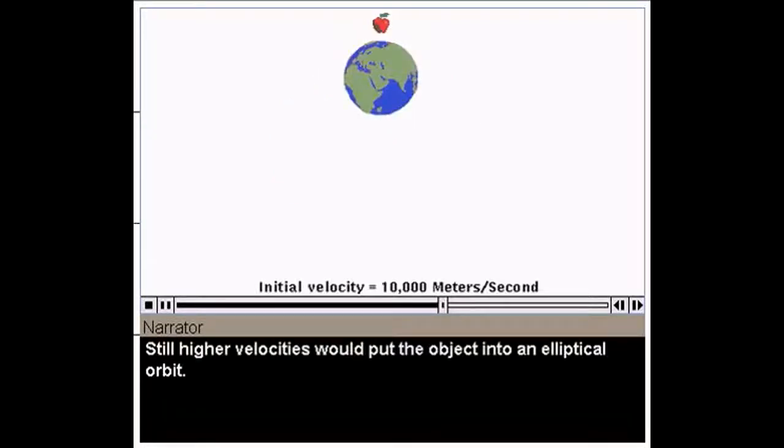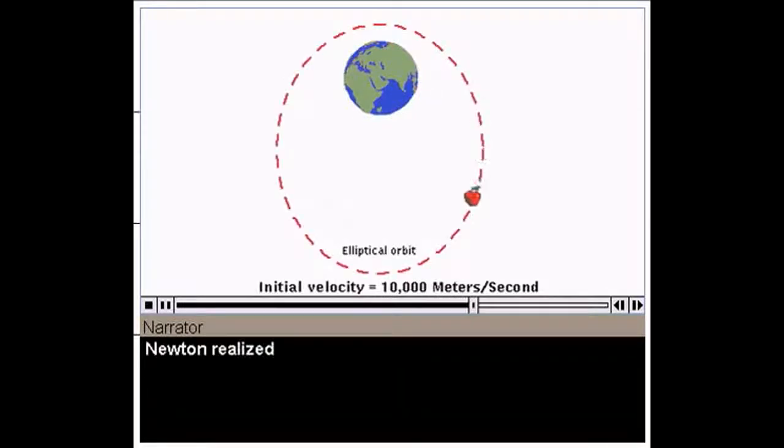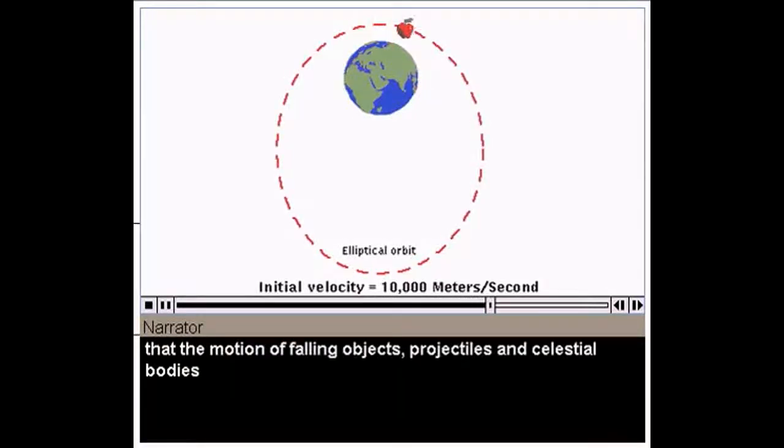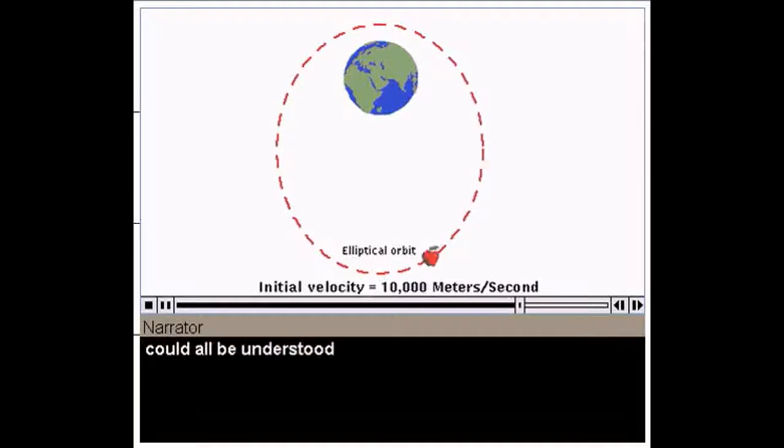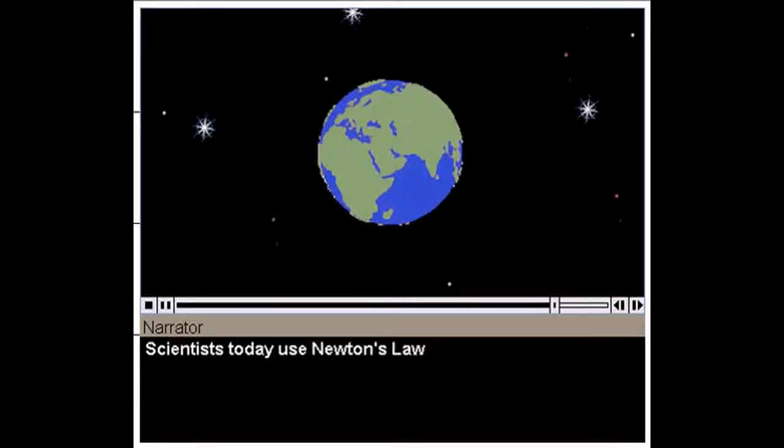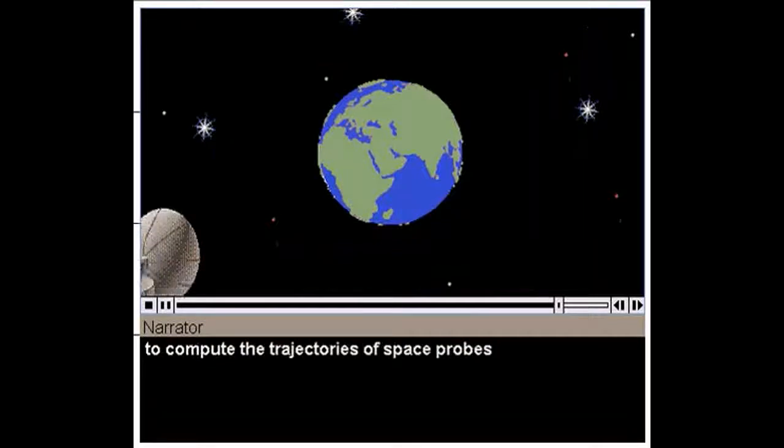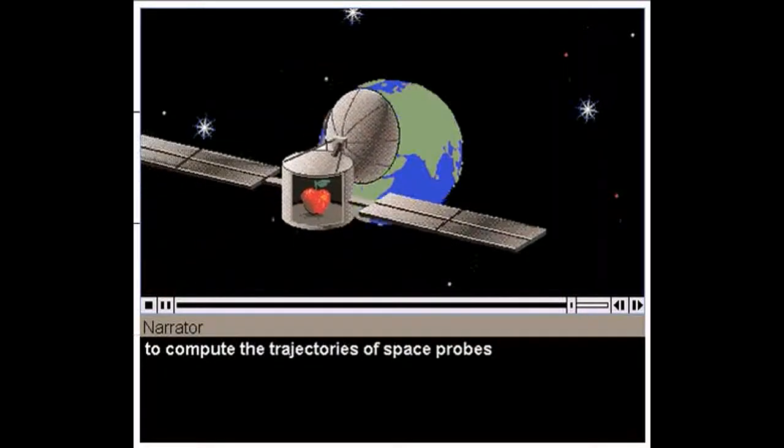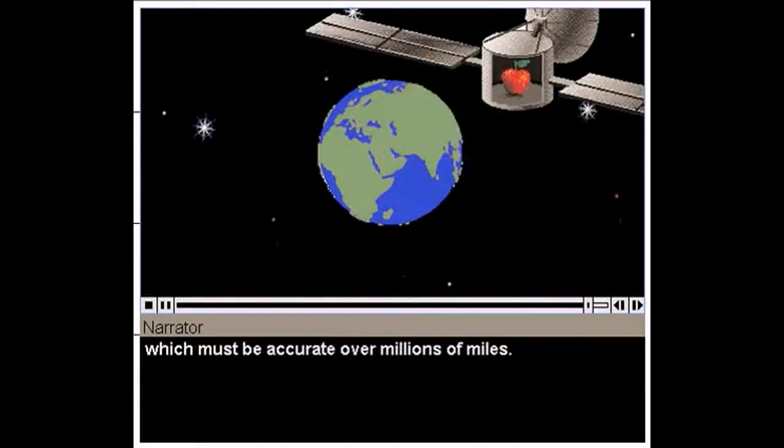Still higher velocities would put the object into an elliptical orbit. Newton realized that the motion of falling objects, projectiles, and celestial bodies could all be understood by a single universal law of gravitation. Scientists today use Newton's law to compute the trajectories of space probes, which must be accurate over millions of miles.